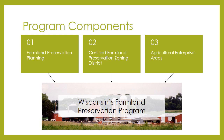This also enables landowners to claim the farmland preservation tax credit. The third component of this program are agricultural enterprise areas. These are landowner-led initiatives to protect agricultural lands and cluster preserved farms. In AEAs, landowners can choose to sign a farmland preservation agreement with the state and in return can claim the farmland preservation tax credit.